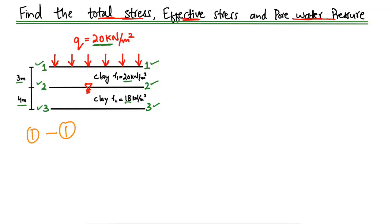To start with point 1-1, we first find the total stress, represented by sigma. At point 1-1, only the applied load is acting on the soil, which is 20 kN per square meter. So the total stress is simply equal to 20 kN per square meter, as there is no other load acting except this live load.